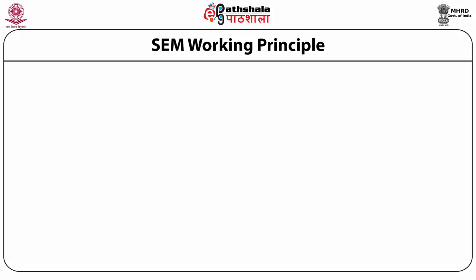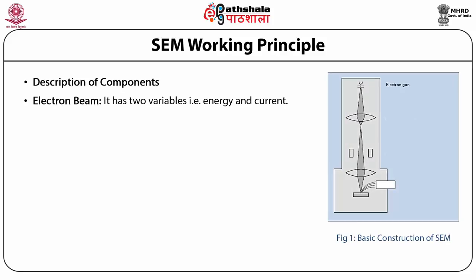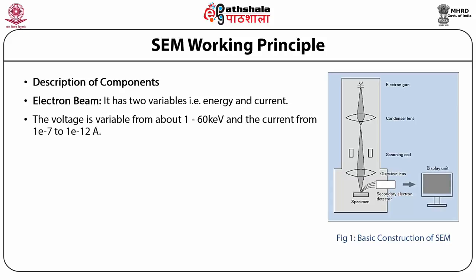The first component is the electron beam, which has two variables: energy and current. The voltage is variable from about 1 to 60 kilo electron volts and the current from 1×10⁻⁷ to 10⁻¹² amperes. These values are specific to the instrument model.